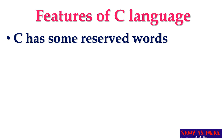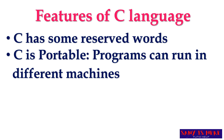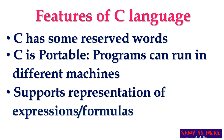C is portable, meaning any program written on one machine can be copied and used on another machine — we can run programs on different machines. C also supports the representation of formulas. Just like how we write formulas in real life, the same formulas can be written in a program, and they are called expressions.